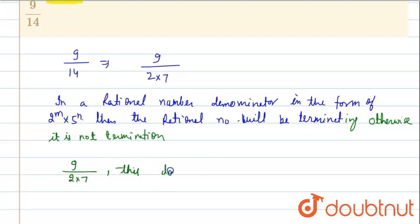this denominator is not in the form of 2 raised to the power m and 5 raised to the power n, where m and n are natural numbers.